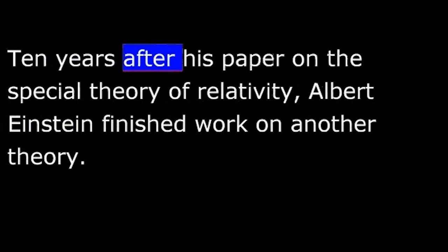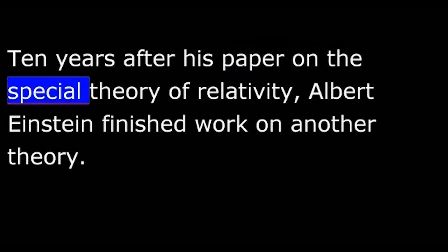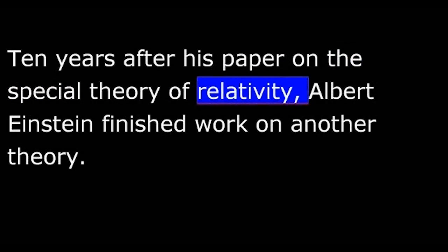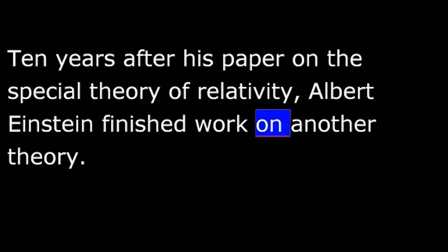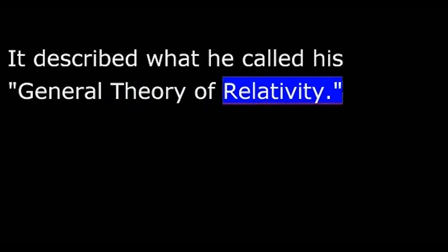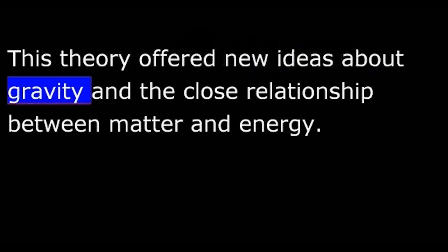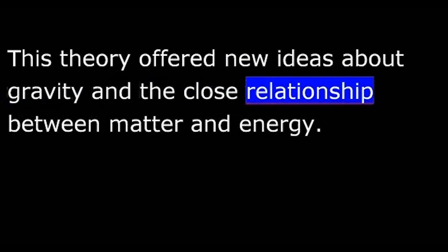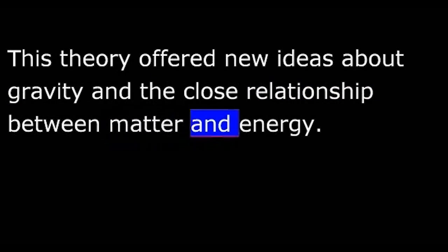Ten years after his paper on the special theory of relativity, Albert Einstein finished work on another theory. It described what he called his general theory of relativity. It expanded his special theory to include the motion of objects that are gaining speed. This theory offered new ideas about gravity and the close relationship between matter and energy.